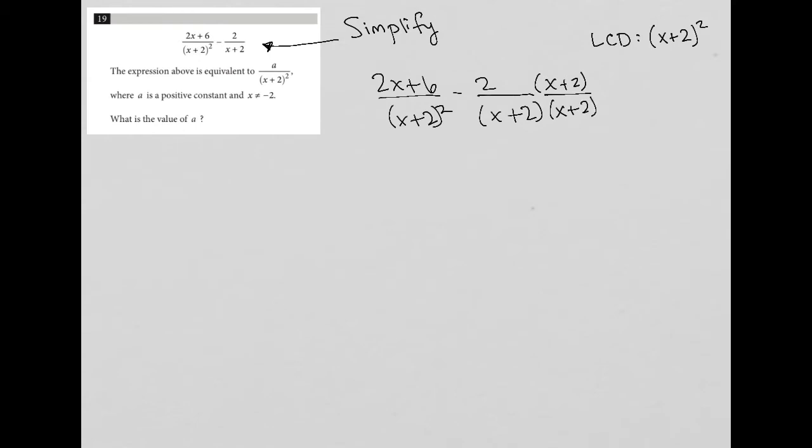So let's see what happens when I do that. I'd have 2x plus 6 over x plus 2 squared, and then I'd have minus 2 parentheses x plus 2 over x plus 2 squared. Now, because the denominators are the same, I can just write this as a single fraction, which is 2x plus 6 minus 2 parentheses x plus 2 all over x plus 2 squared. And I can simplify that further.